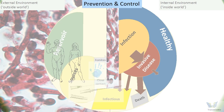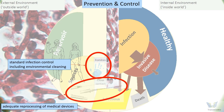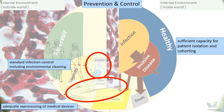In terms of prevention and control of the disease, the key measures include good standard infection control in health care facilities, including environmental cleaning and proper hand hygiene, combined with adequate reprocessing of medical devices that can be contaminated. In addition, there should be sufficient capacity of health care facilities for patient isolation and cohorting.